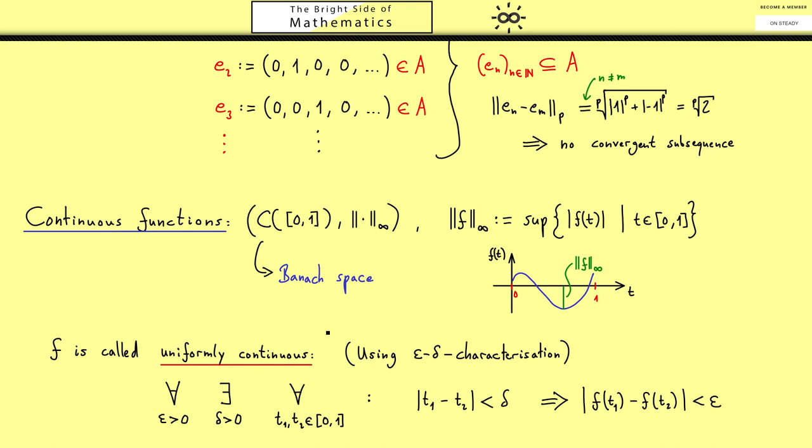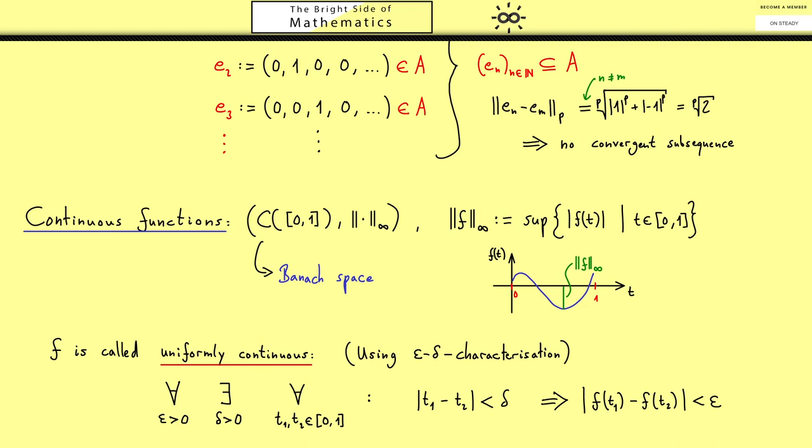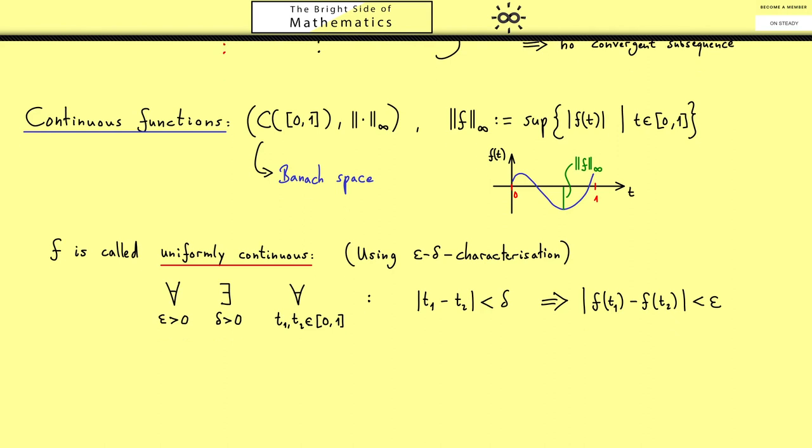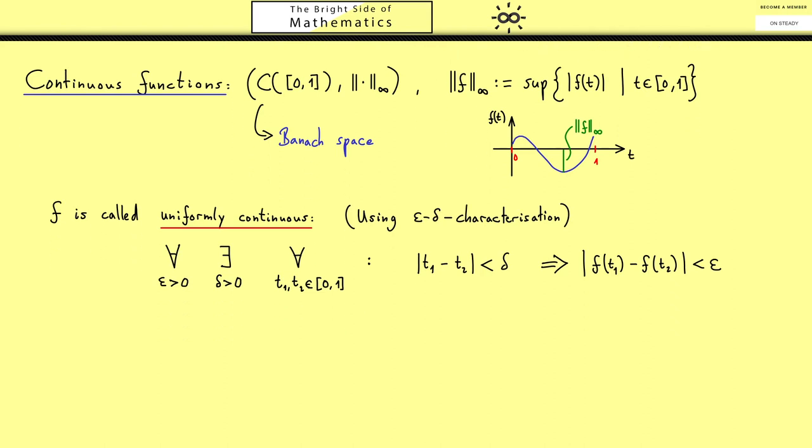Now we have a fact you might know: if we have the continuous functions on a compact interval then they are also uniformly continuous. Now let's go one step deeper into the topic and look at a whole subset of continuous functions. So we have a whole family of functions we call A and now we want a notion of continuity that works uniformly in the set A. And this is something we call then uniformly equicontinuous.